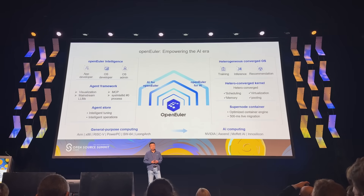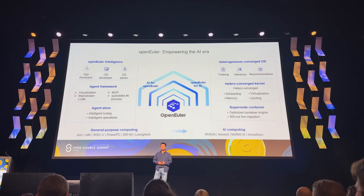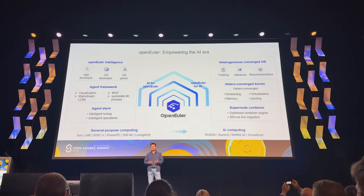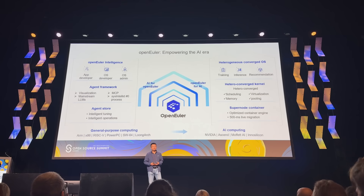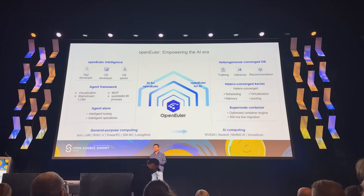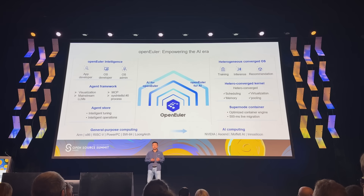Of course, everyone is talking about AI, and OpenEuler is doing the same. Last year at OSS, our Chairman of the Technical Committee, Hu Xiong Wei, released our AI strategy and planning. Today I bring some new things we have implemented — some of the AI strategy and technology. For OpenEuler, our AI strategy is very simple: we call it 'AI for OS and OS for AI.'